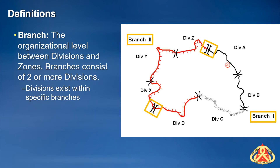As an incident grows in size and complexity, branches may be created. A branch is supervised by a branch director and will usually contain multiple divisions. In some cases, a branch may be used to identify a specific function on the incident and may not contain divisions.